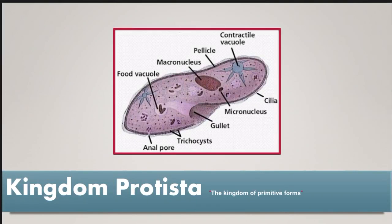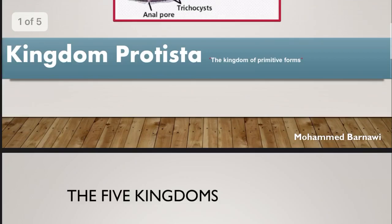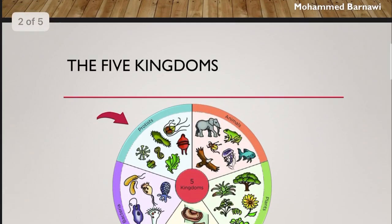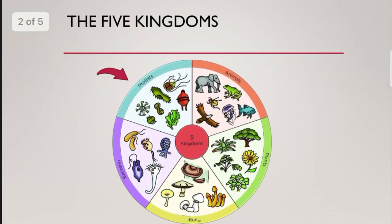Assalamu alaikum, I'm Ahmad from class 8A, and today I'm going to talk about Kingdom Protists. There are five kingdoms: protists, animals, plants, fungi, and bacteria.